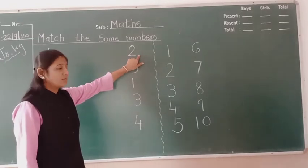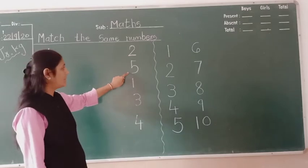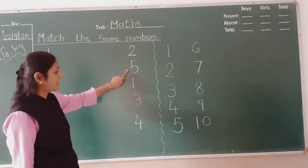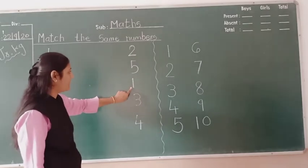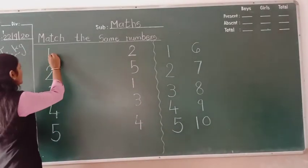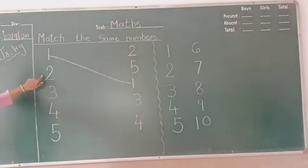Okay, first number 1. So we can see here number 1. So this is number 1? No, this is number 2. Here is number 1? No, this is number 5. Here is number 1? Yes, this is number 1, so match it.